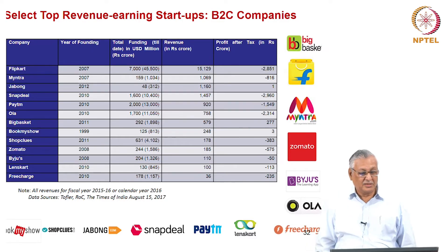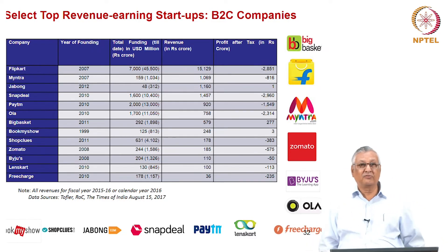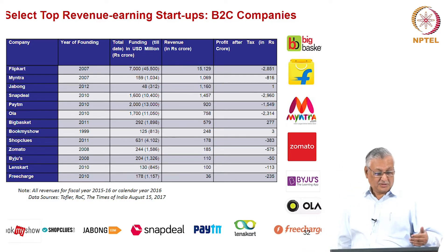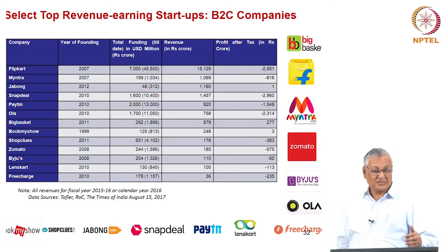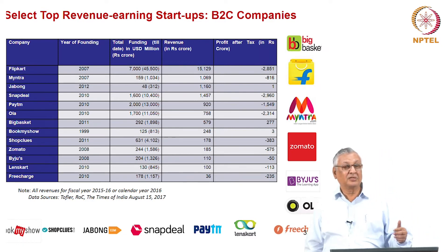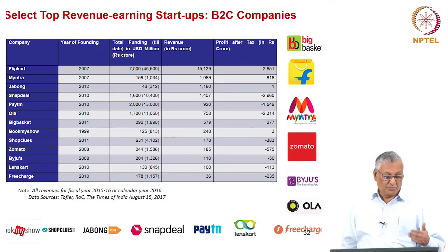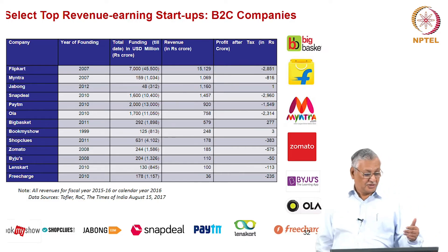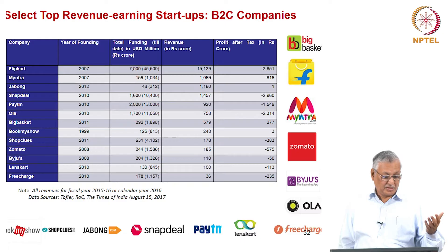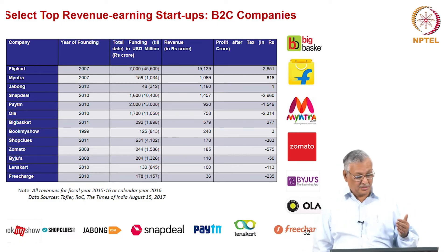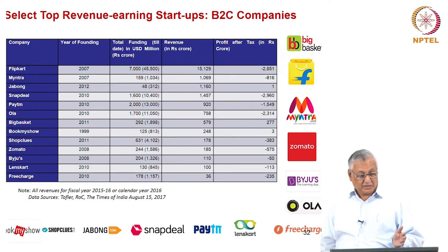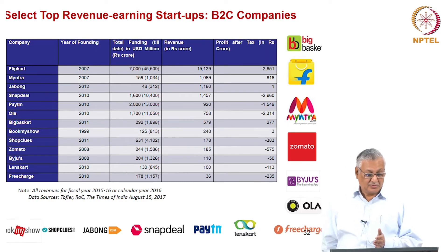Here we have select top-ranking B2C companies. Many are well known: Flipkart, Jabong, Snapdeal in e-commerce fashion; Paytm in digital payments; Ola in ride-hailing; Big Basket in grocery supply; Book My Show for concert and event tickets; Shop Clues; Zomato in food delivery; Byju's in online education; Lenskart providing spectacles on demand; FreeCharge for mobile prepaid applications. Most were founded between 2005 and 2010 and have received huge funding to date, with revenues just equal to or less than the funding received.